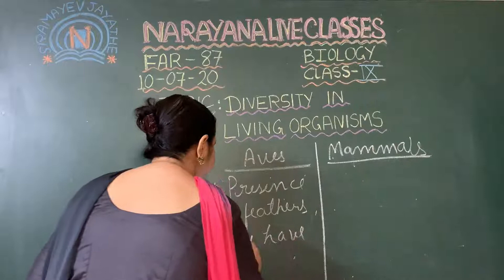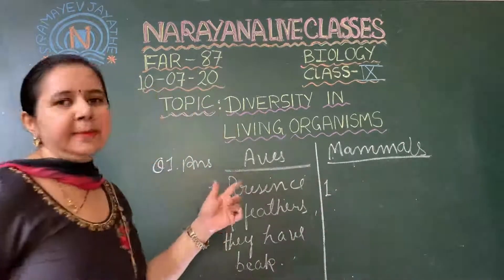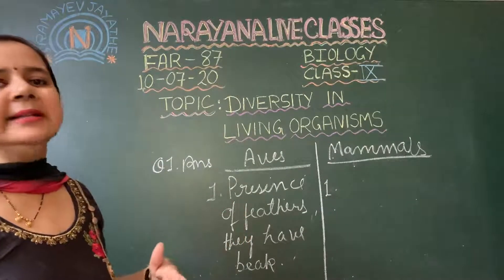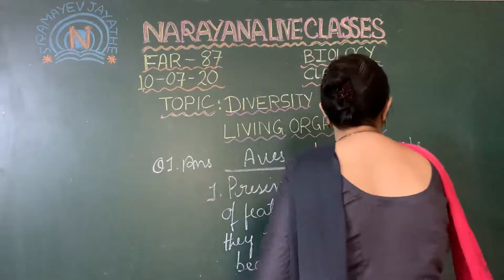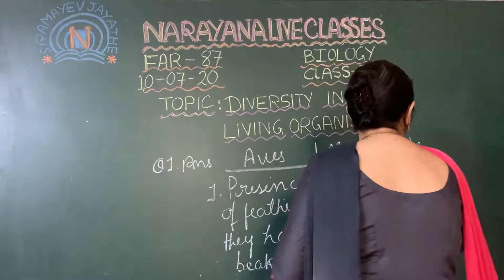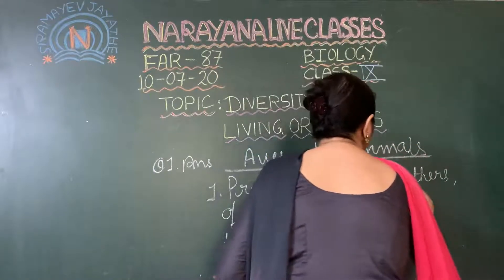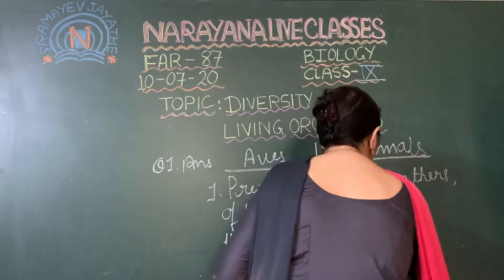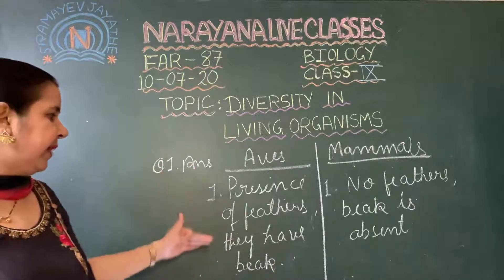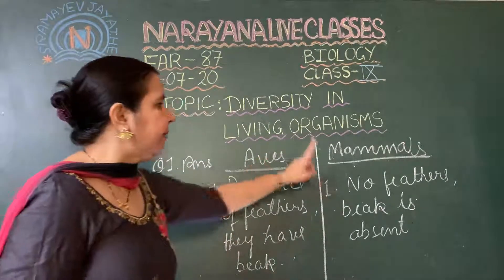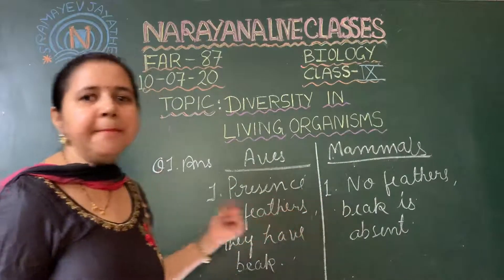Aves have feathers all over the skin as well as a beak. But feathers are absent in mammals and they don't have a beak either. So aves have feathers all over the body and a beak, but mammals have neither feathers nor a beak.